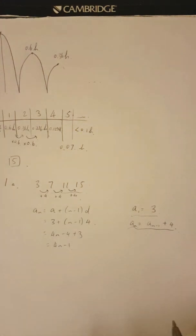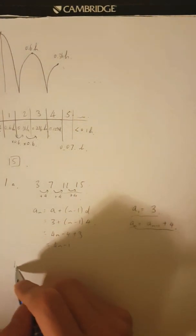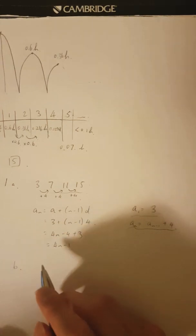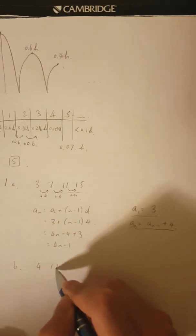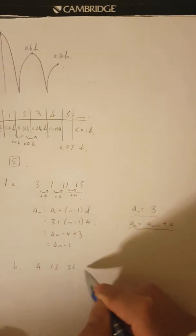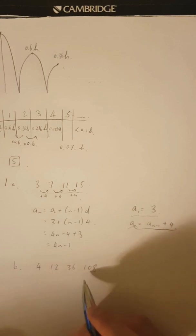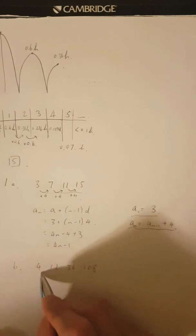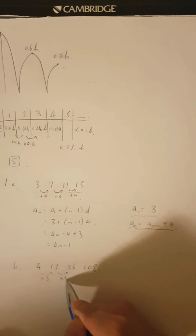So this is the recursive form and you need both parts in order to get full credit — so do not forget. That was A. Let's go to B. For B: 4, 12, 36, 108. It does not seem like an arithmetic progression, but you can see that there's a common ratio of three.